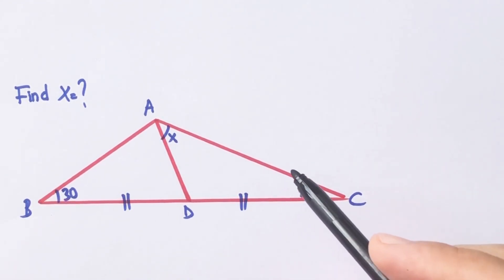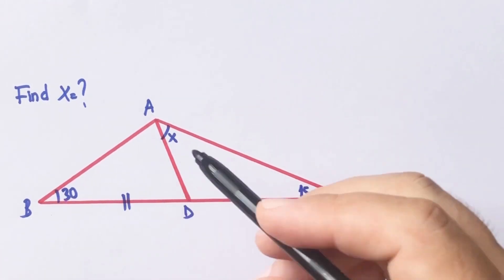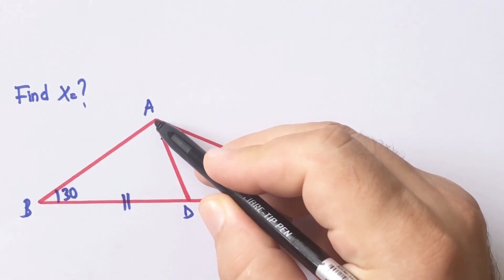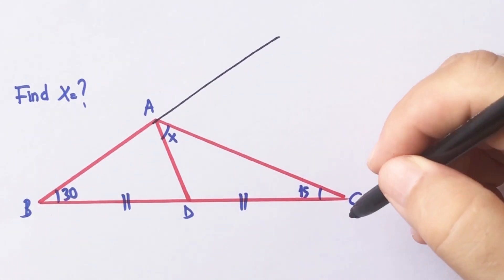Okay, first step, let's draw a perpendicular line opposite of the 30 degrees like this.